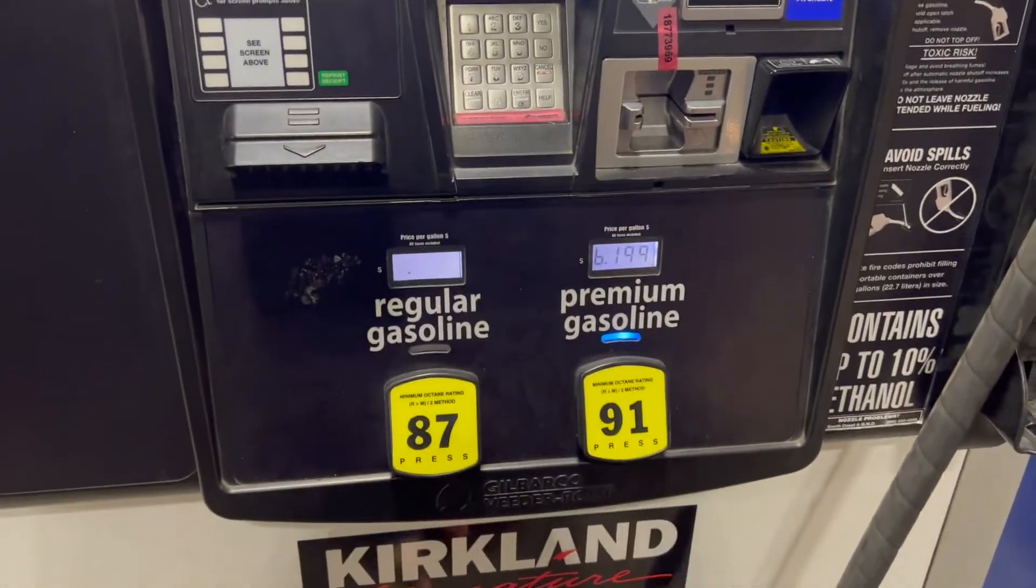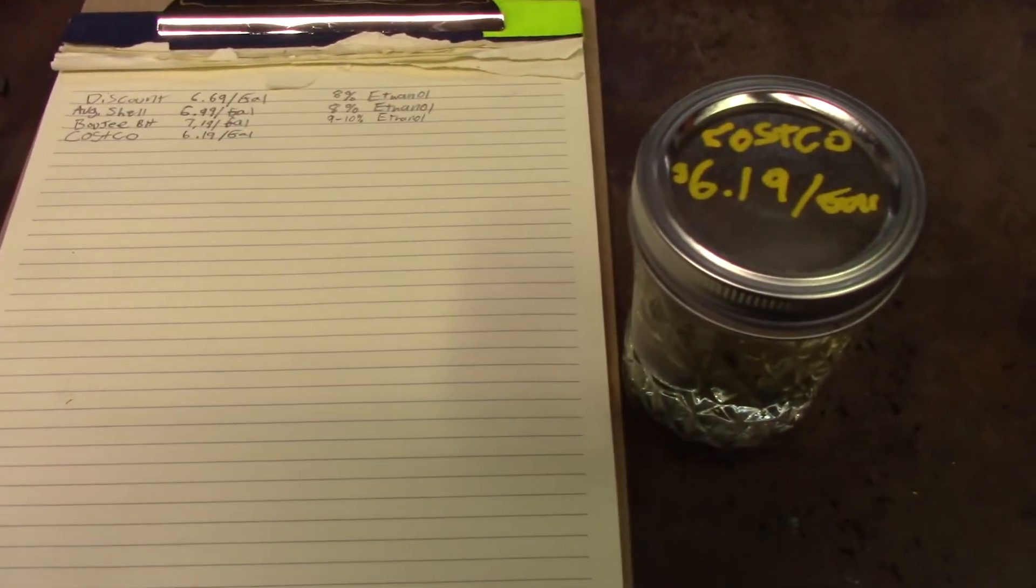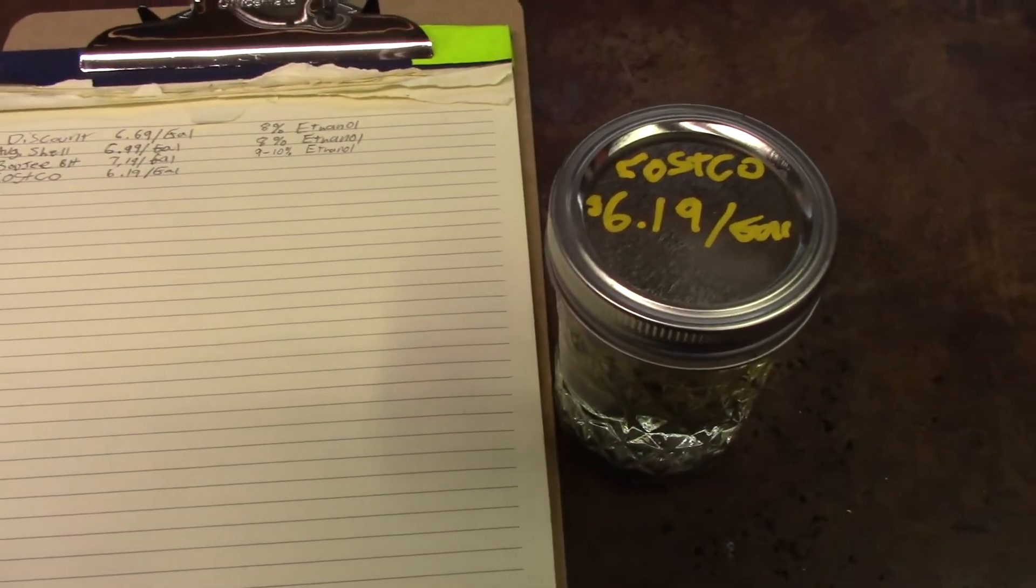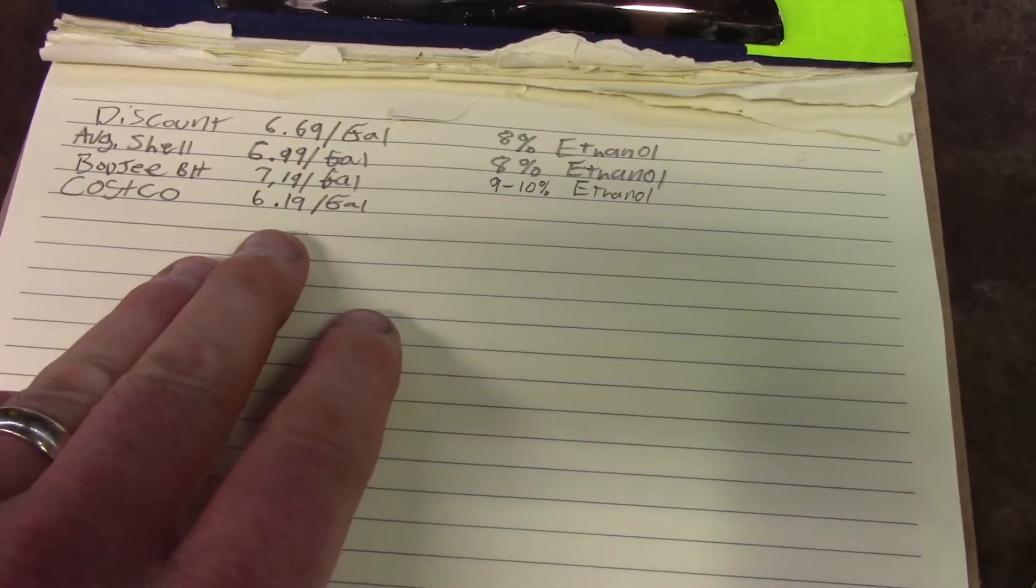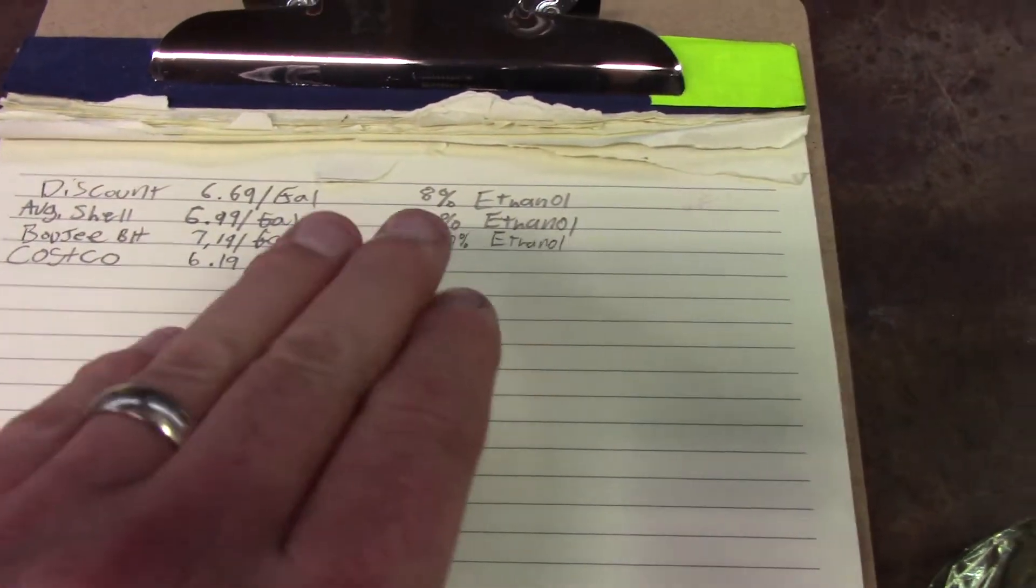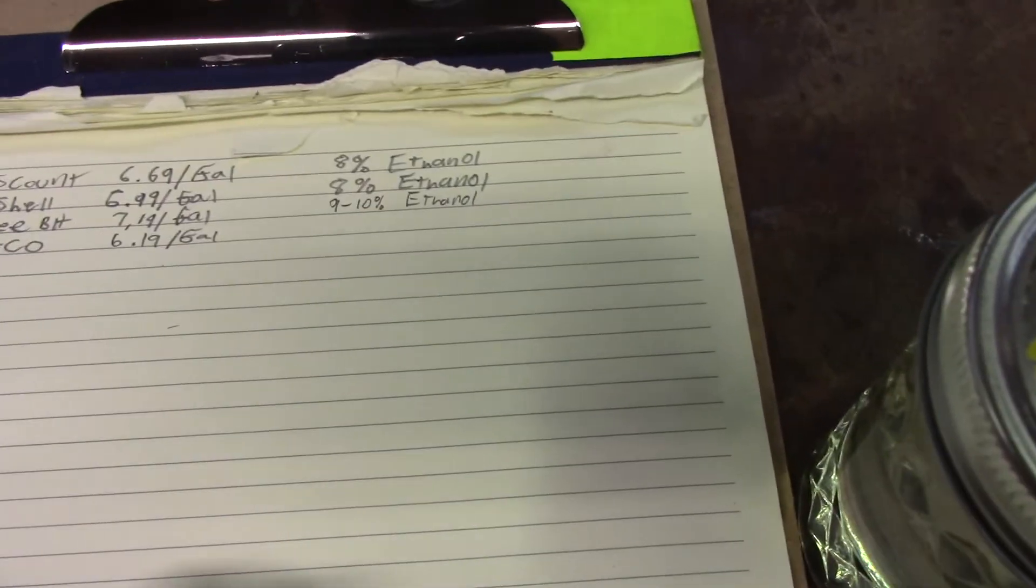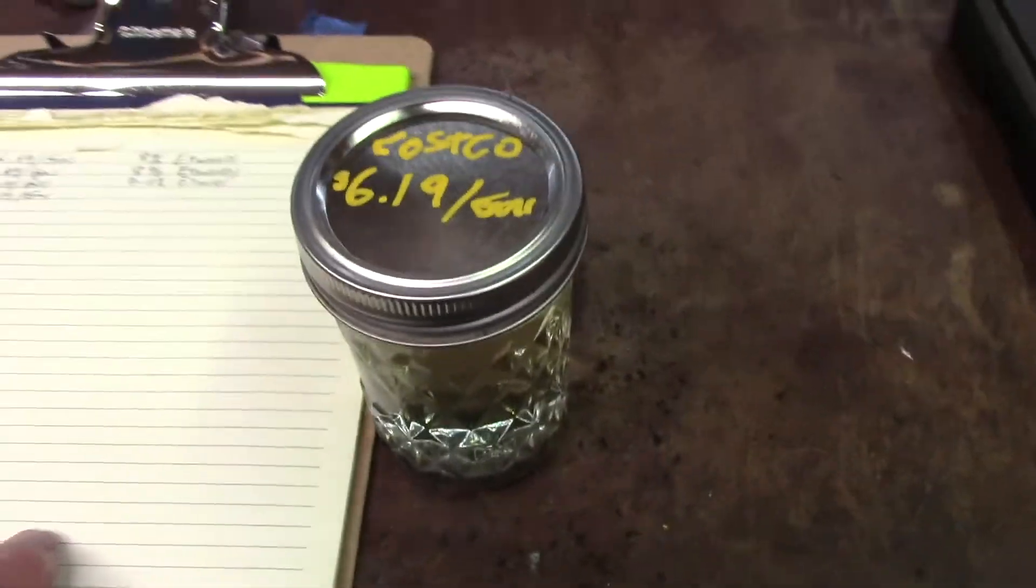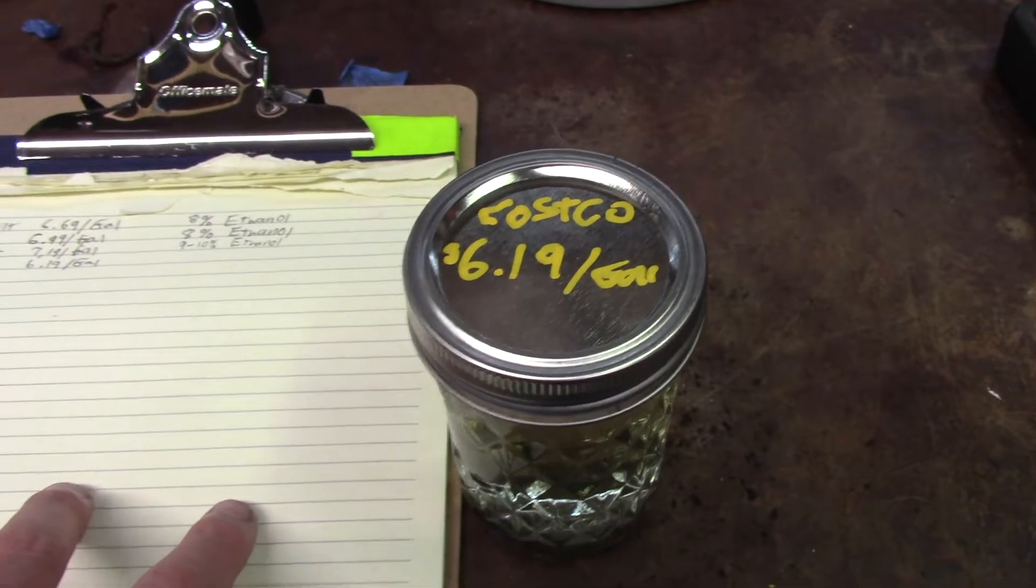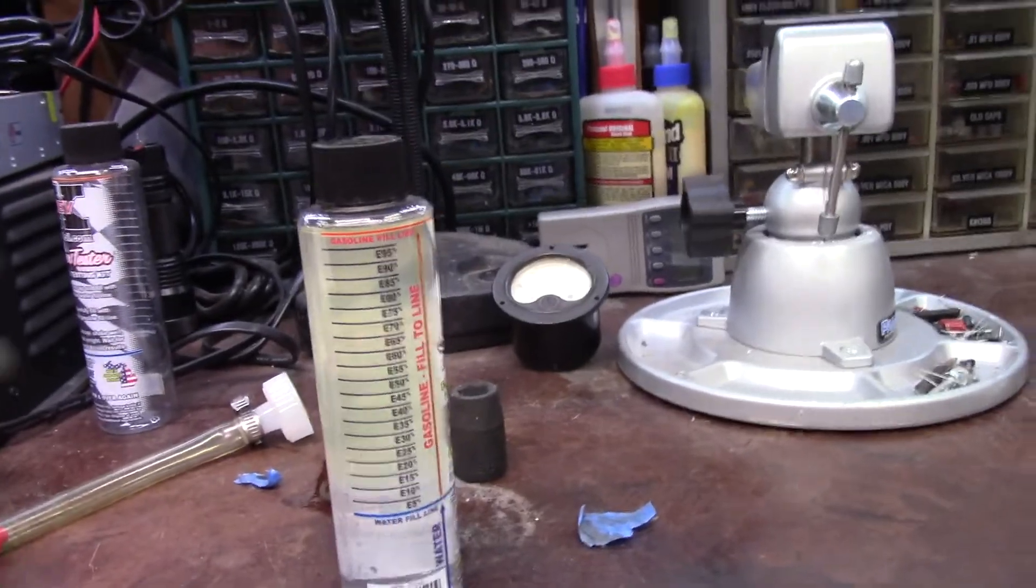You knew I had to do it. Got to test the Costco gasoline. Got the Costco gasoline for $6.19 a gallon. Had to wait in line for it. Let's go ahead and test this one. I would expect that this would have a higher ethanol content. But maybe it won't. Costco has pretty high standards. I believe they have their own refineries for their fuel.